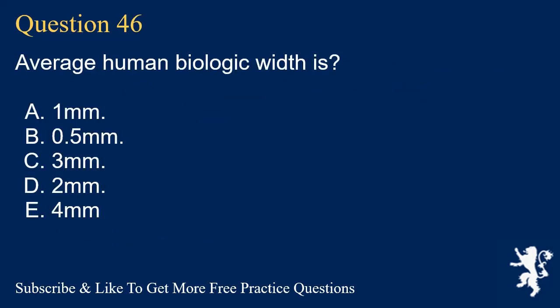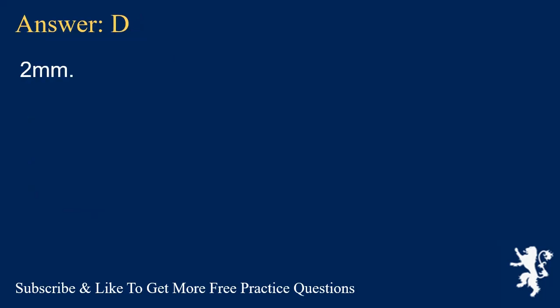Question 46. Average human biologic width is? A. 1 mm. B. Half a millimeter. C. 3 mm. D. 2 mm. E. 4 mm. Answer: D. 2 mm.